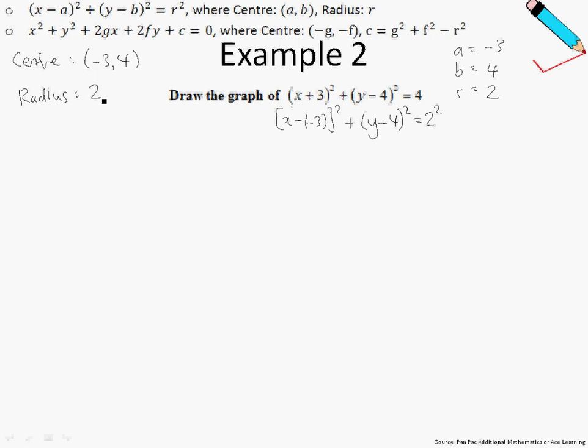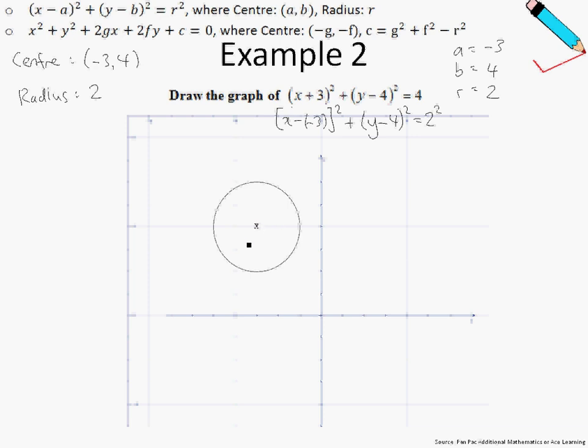So the center of the circle is just negative 3 comma 4, and my radius is just 2. So we start by plotting the center. The center of the circle is over here, which is negative 3 comma 4, and the radius, which is the distance between the center to any point on the circle, should just be 2. So this is my radius.